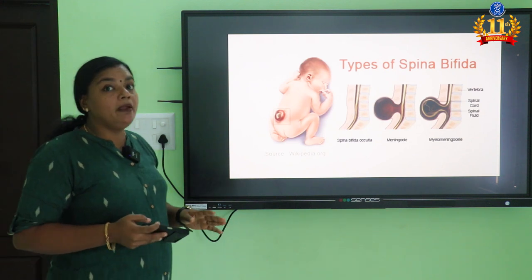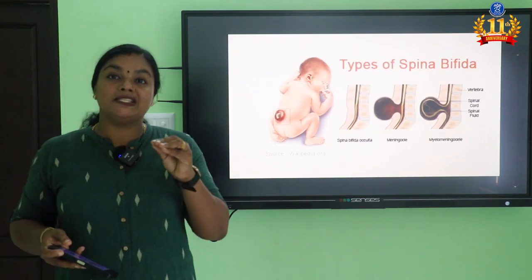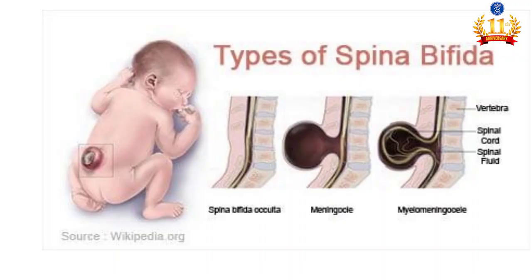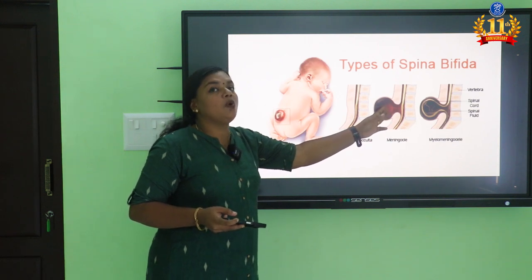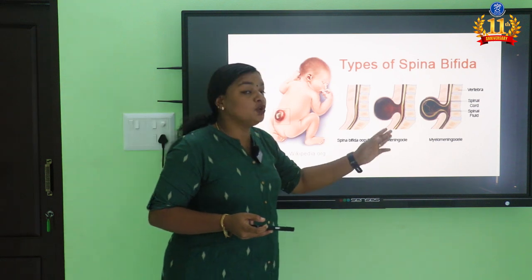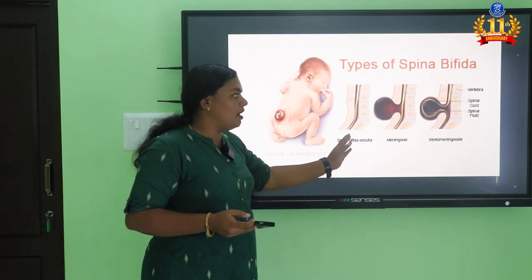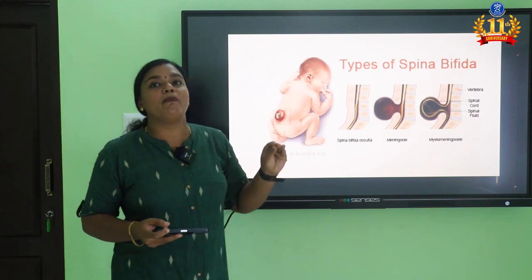Spina bifida has three types: spina bifida occulta, meningocele, and myelomeningocele. In spina bifida occulta, there is a dimple in the back and a patch of hair over the lower spinal cord region. Meningocele has only a sac protrusion with no spinal cord contents. Myelomeningocele has nerve involvement in the sac. Spina bifida occulta is one category; meningocele and myelomeningocele together are called spina bifida cystica.